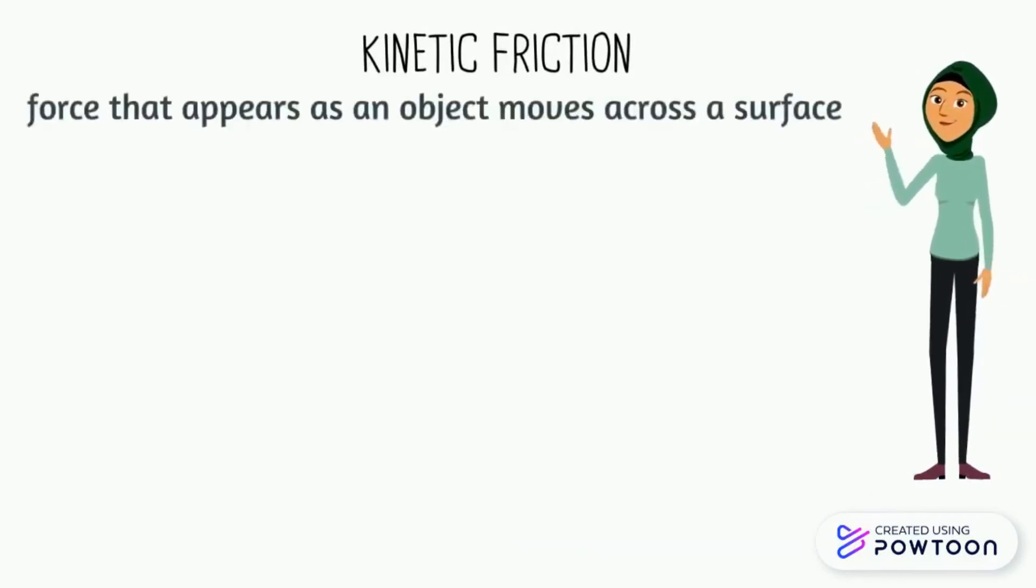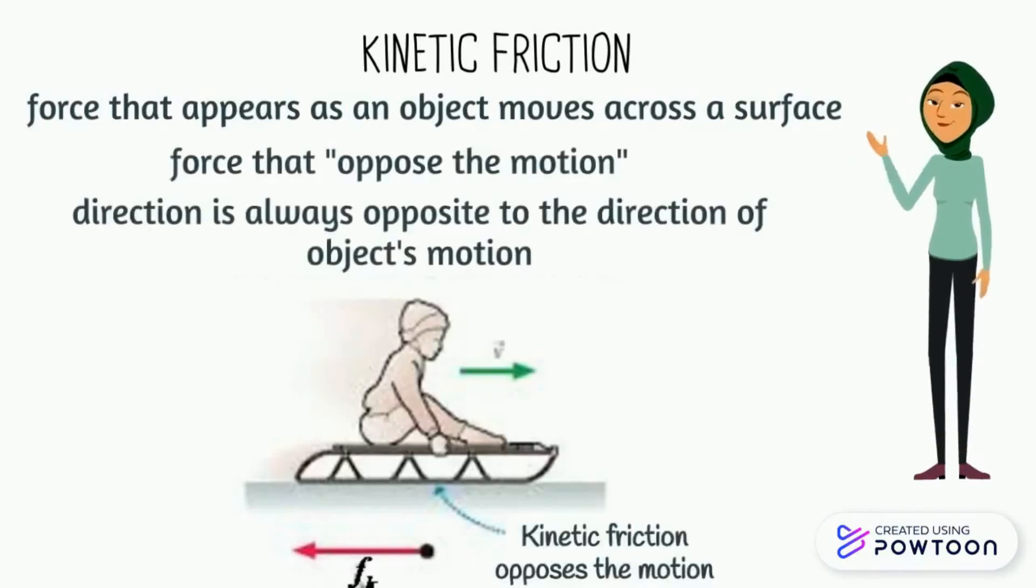Whereas kinetic friction is the force that appears as an object moves across a rough surface. Known as the force that opposes the motion, directed in such a way that is always opposite to the direction of motion with the symbol of f subscript k.